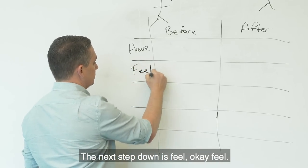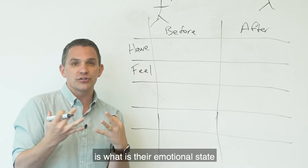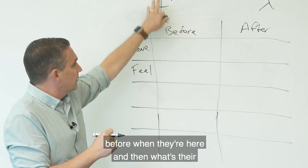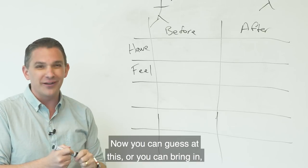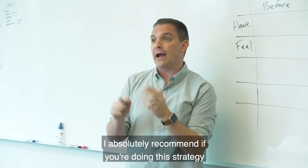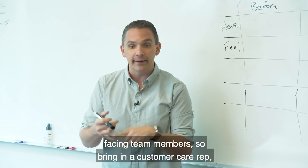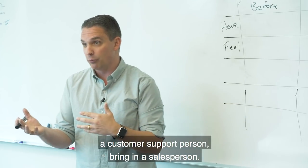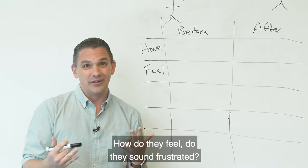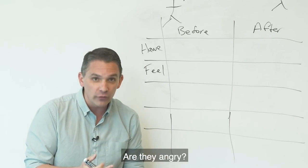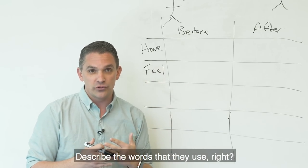The next step down is feel. What we're beginning to articulate here is what is their emotional state before when they're here? And then what's their emotional state after? What's the emotional state before and what's the emotional state after? Now, you can guess at this or I absolutely recommend if you're doing this strategy and you have a team, bring in some customer-facing team members. So bring in a customer care rep or a customer support person. Bring in a salesperson. Someone who's talking to people in this before state and ask them, what are they like? How do they feel? Do they sound frustrated? Are they angry? Just what is their emotional state? Describe it. Describe the words that they use.